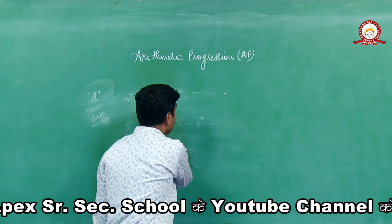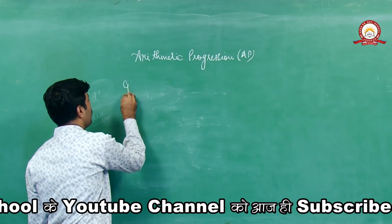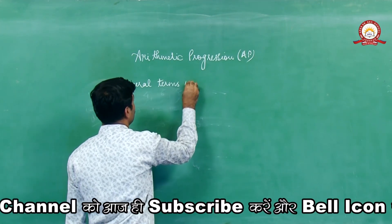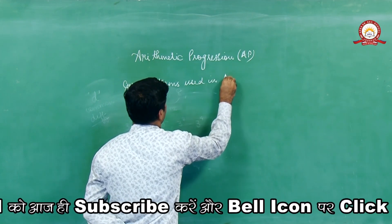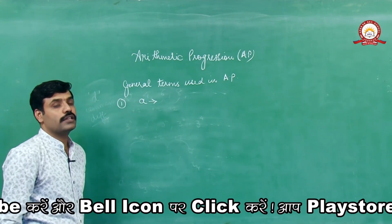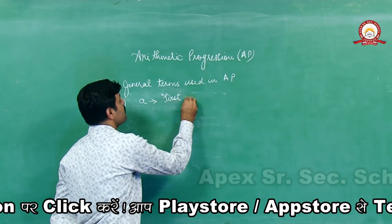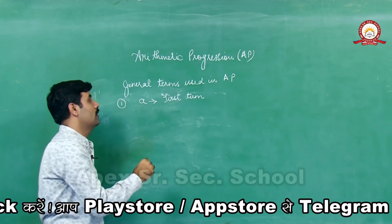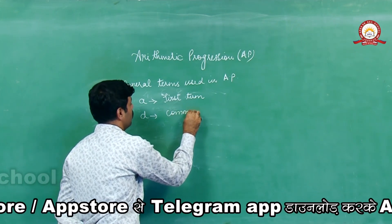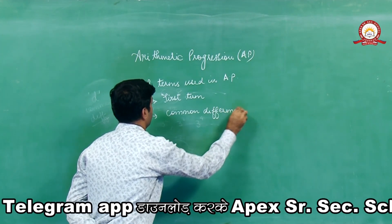Constant difference वाला sequence AP होता है। AP में use होने वाले general terms की बात करते हैं। First is A — जो किसी भी AP का first term होगा उसे A से represent करते हैं। Then second thing is D, which is the common difference।